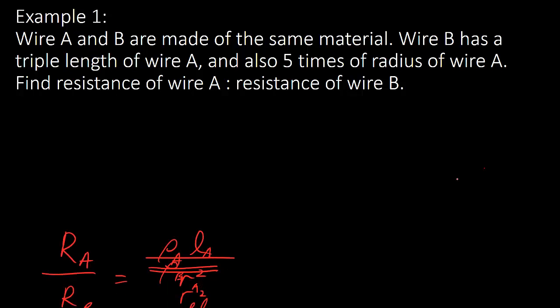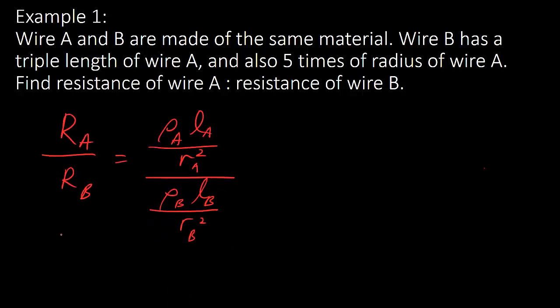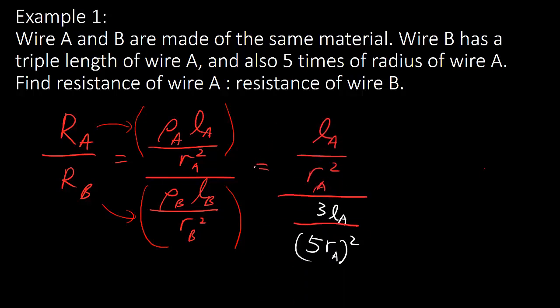So what you're gonna do is, I would say, usually write down R A over R B when you compare two wires resistant. And then, once again, you use this and this formula. Basically substitute this into this and this into this with all the subscript A, B, A and B directly.